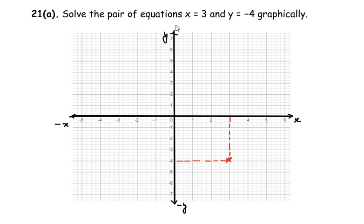Where these two lines meet, that coordinate is going to give us the solution of these equations. So here we have the point (3, -4). This is what we have to show for the given question 21a.